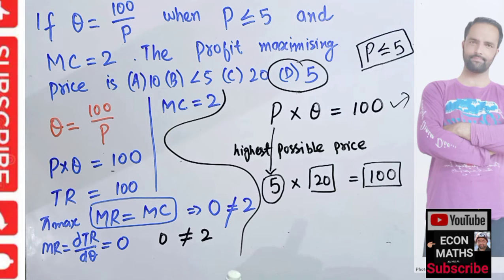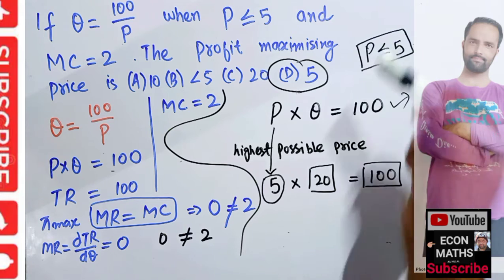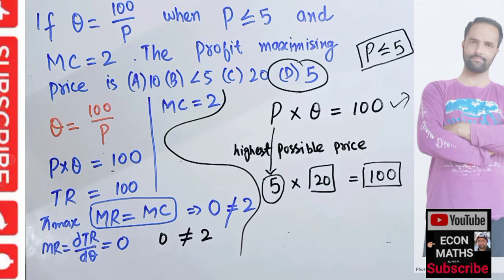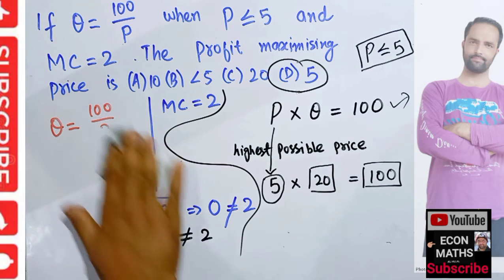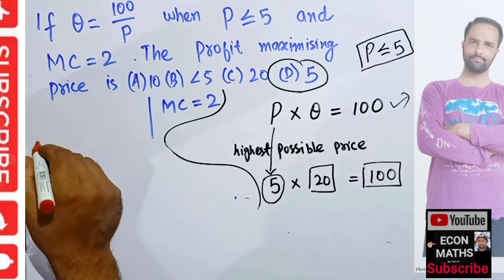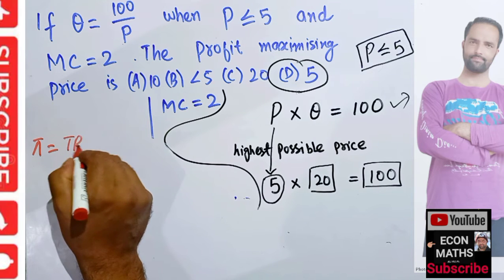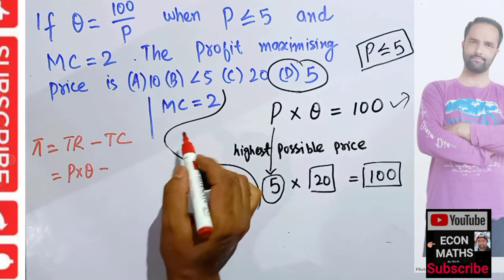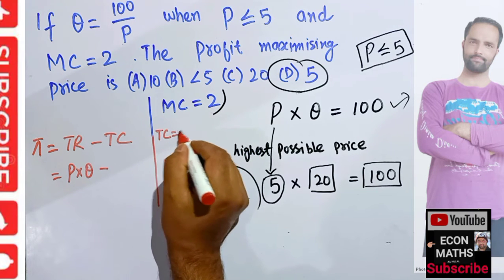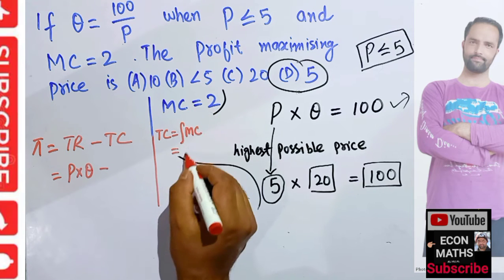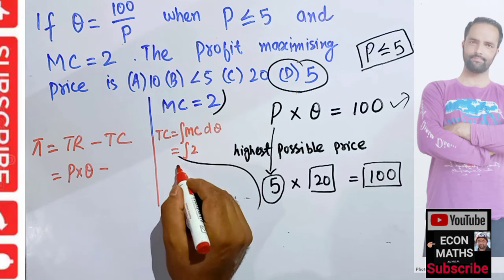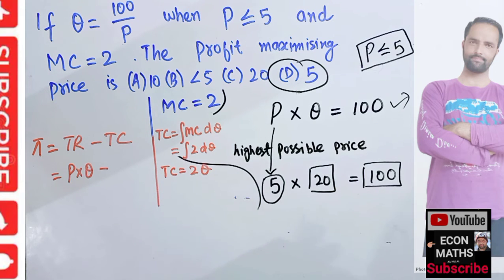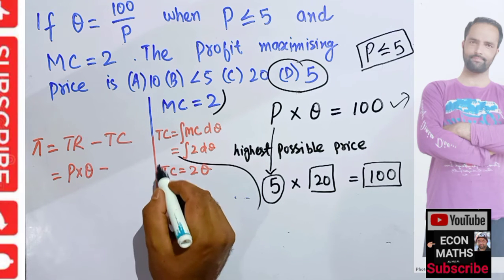Now let us prove whether P equals $5 is truly the profit-maximizing price. We know profit equals total revenue minus total cost. Total revenue is P times Q. Total cost is the integral of the marginal cost function, so total cost equals 2Q.